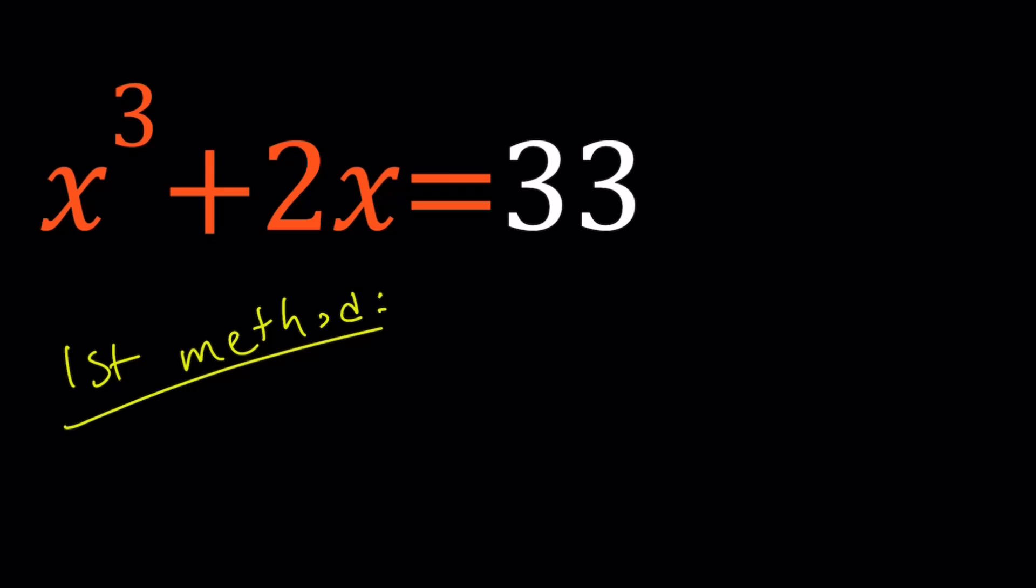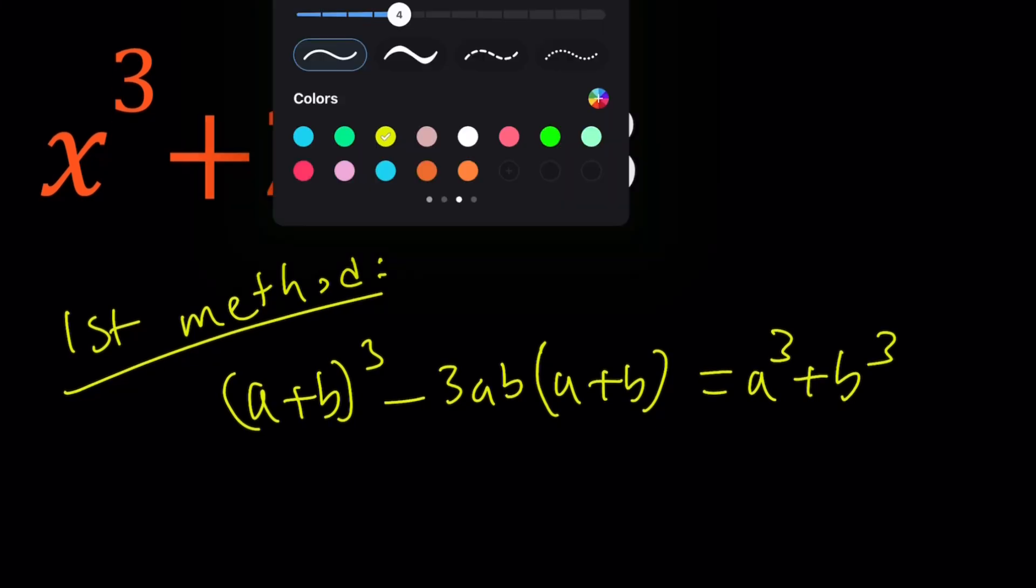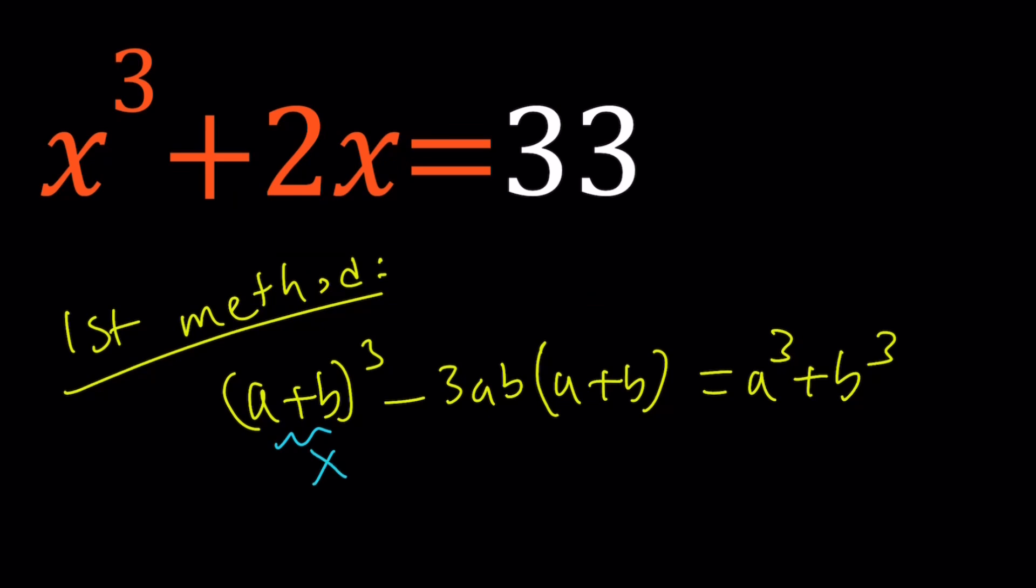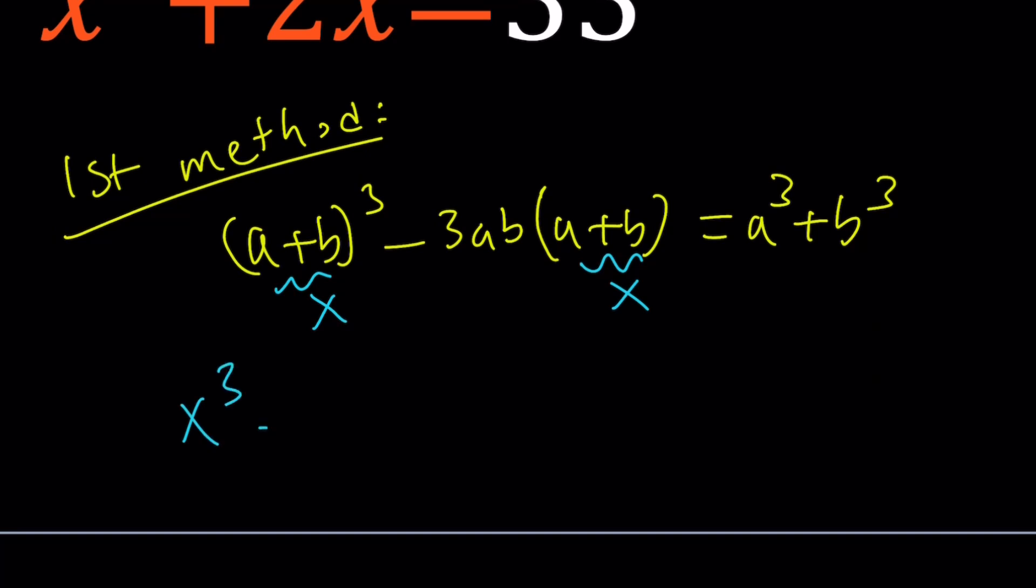The first method basically deals with the cubic formula. So, we have something like this: (a + b)³ - 3ab(a + b) = a³ + b³. This is an identity, and you'll see that if you expand by binomial formula, you're going to get this identity. This is a really nice identity because it can be used to solve all cubic equations. Let's just replace a + b with x.